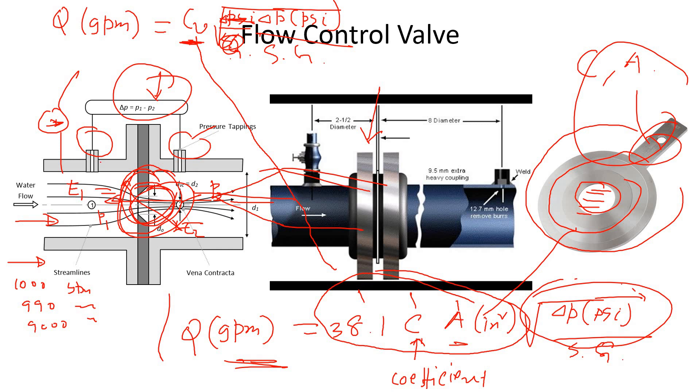Because the exact same thing happens for a flow control valve, the only difference is the coefficient. It is expressed in a little bit more detail for orifice, but for control valve it expresses this whole thing. So basically this whole 38.1 CA is this CB - that's the difference.